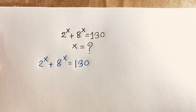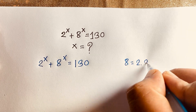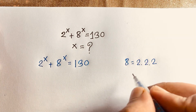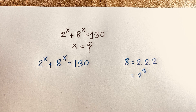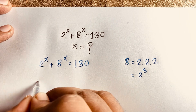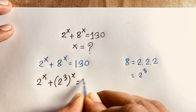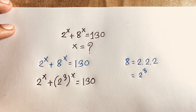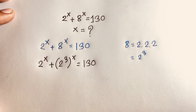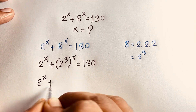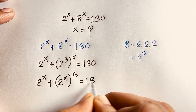Now, here is 8 to the power x. One of that 8, it will be 2 times 2 times 2 — I mean, it will be 2 to the power 3. So I consider this 8 as 2 to the power 3. So in this expression, 2 to the power x plus 2 to the power 3, whole to the power x, is equal to 130.